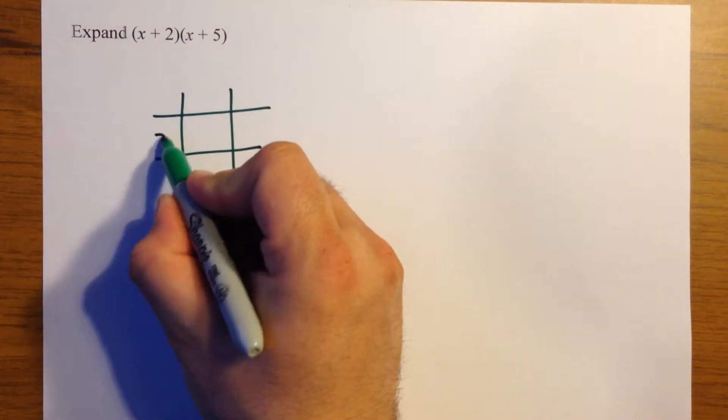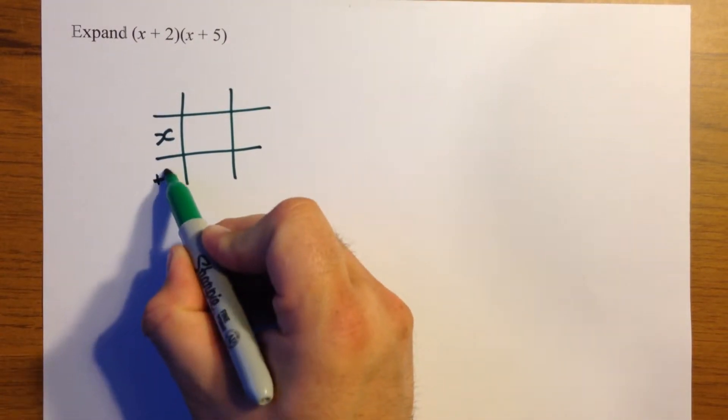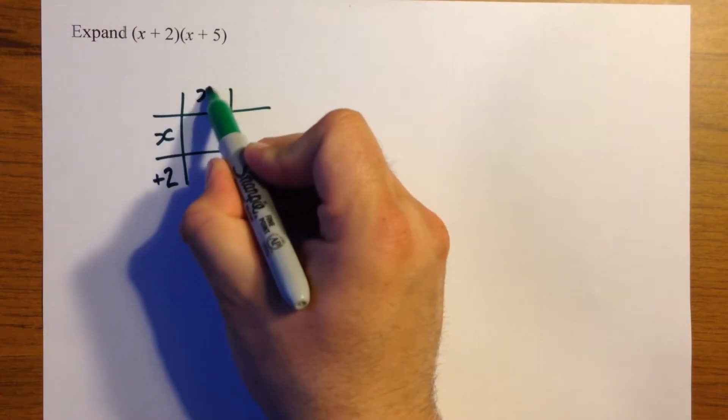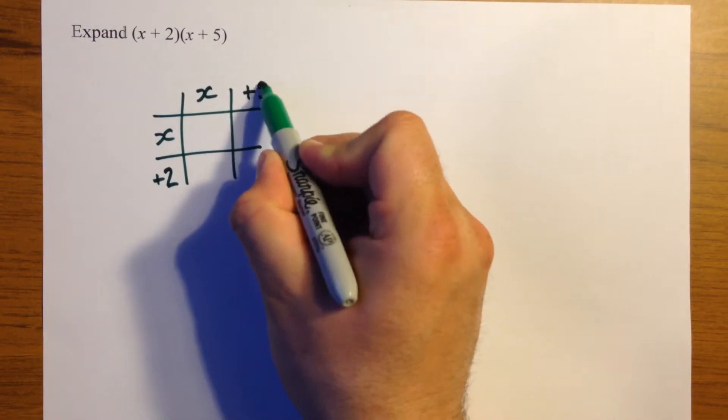So you put one bracket down the side, so x goes there, positive 2 there, x there, positive 5 there.